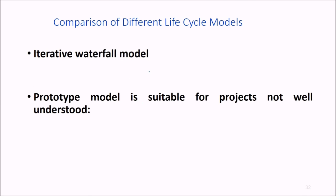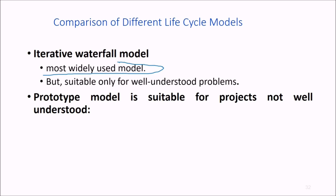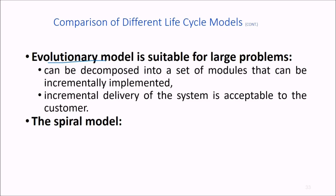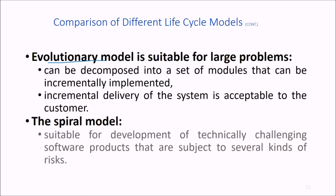Let's compare these different life cycle models from classical to spiral. The iterative waterfall model is most widely used but suitable only for well-understood problems. The prototype model is suitable for projects where user requirements and technical aspects are not well understood. The evolutionary model is suitable for large problems that can be decomposed into modules for incremental implementation when incremental delivery is acceptable to the customer. The spiral model is suitable for developing technically challenging software products subject to several kinds of risks, as risk analysis is the basis of the spiral model.